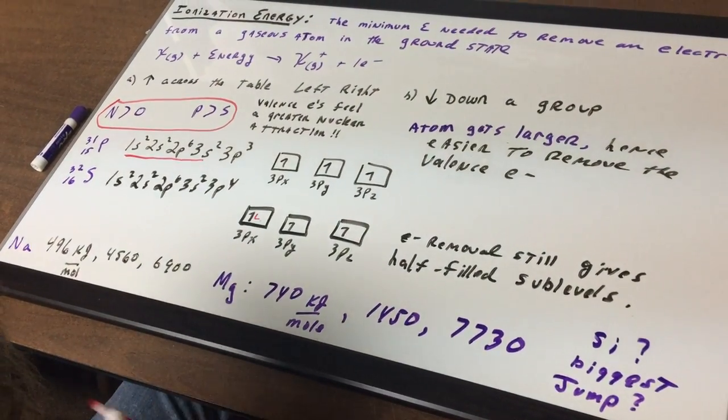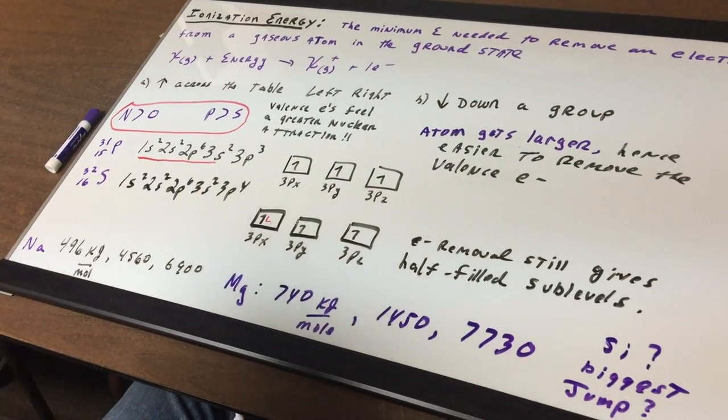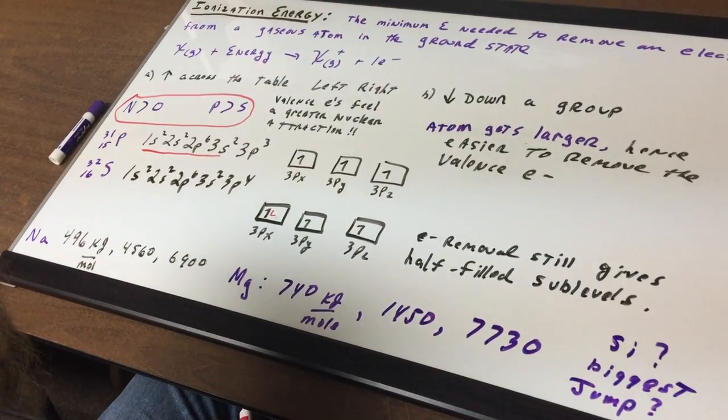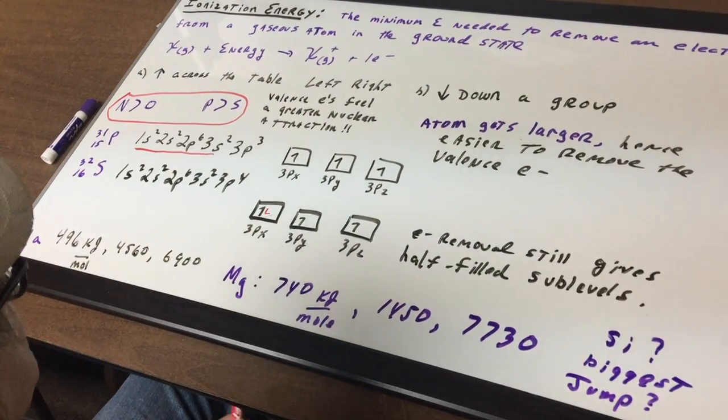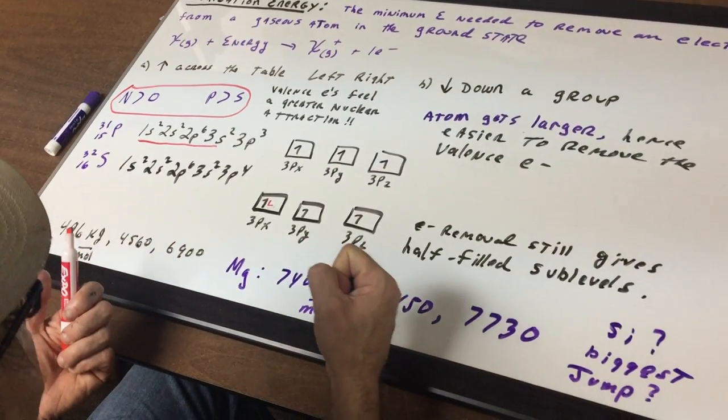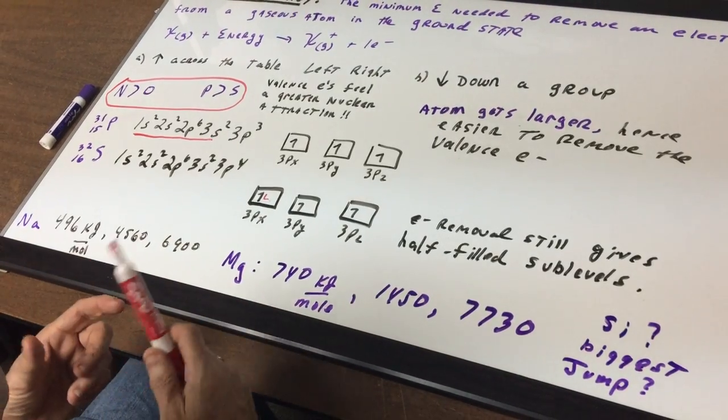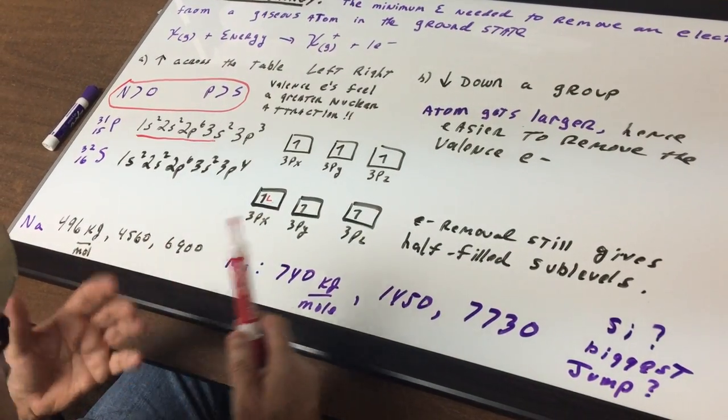One last thing, the way I teach my students. Say we look at sodium. Sodium is in group one. Think of ionization energy as the energy required not to remove an electron from a gaseous atom, but if you think about it, the way I teach my kids is the energy required to remove a tooth.